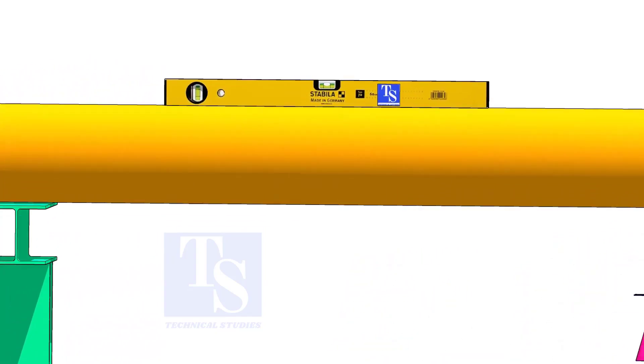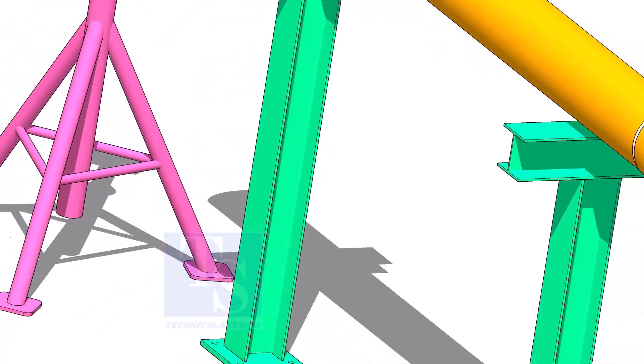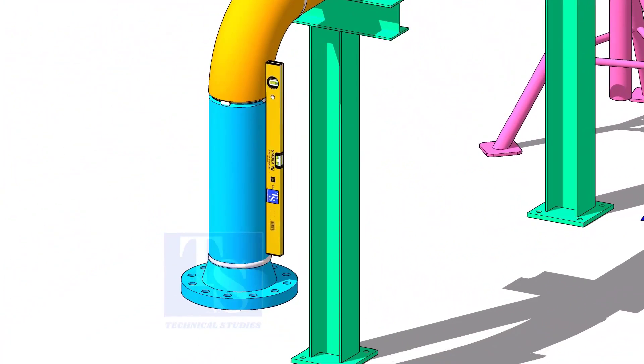Rotate spool number 2 vertically as shown and level the pipe. This position will ease the fit-up of spool 4.